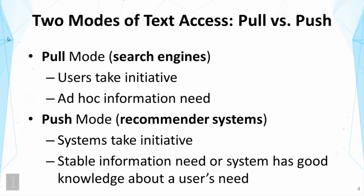The push mode would be appropriate if the user has a stable information need. For example, you may have a research interest in some topic, and that interest tends to stay for a while, so it's relatively stable. Your hobby is another example of a stable information need. In such a case, the system can interact with you and learn your interest, and then monitor the information stream. If the system has seen any relevant items to your interest, it could recommend the information to you. For example, a news filter or news recommender system could monitor the news stream and push interesting news articles to you.